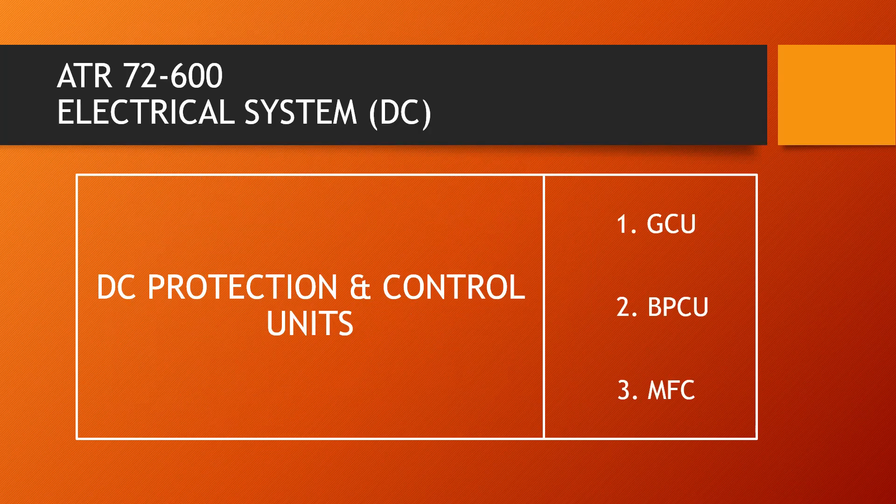Now let us see how this DC power is controlled and protected, as an uncontrolled and non-protected system leads to unreliability. DC power control and protection is provided by 3 computerized equipments: 1. Generator Control Unit or GCU. 2. Bus Power Control Unit or BPCU. 3. Multifunction Computer or MFC.